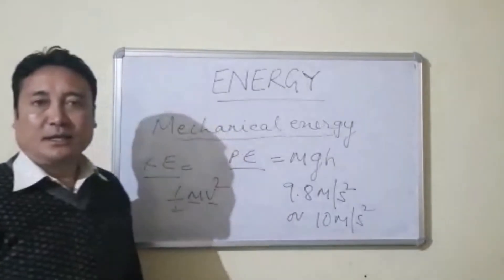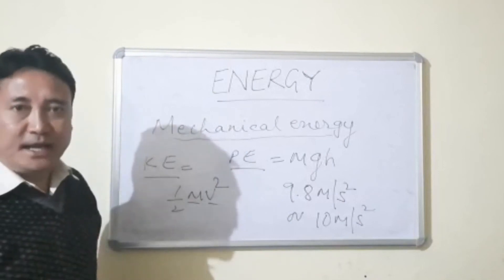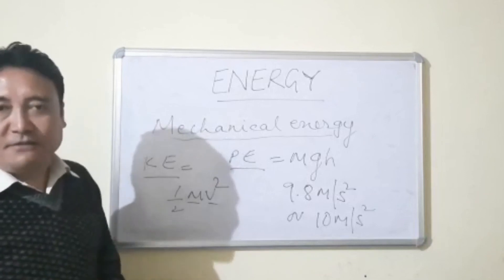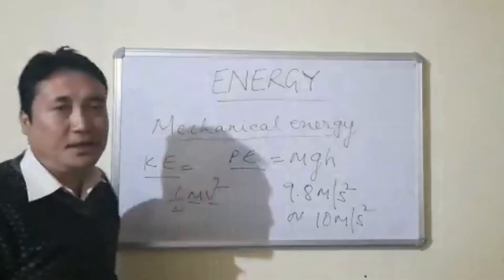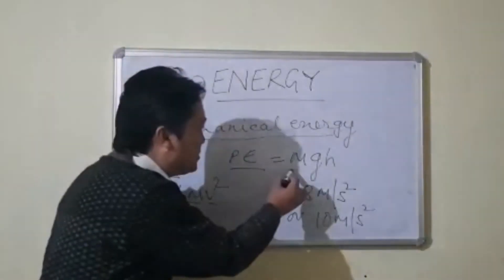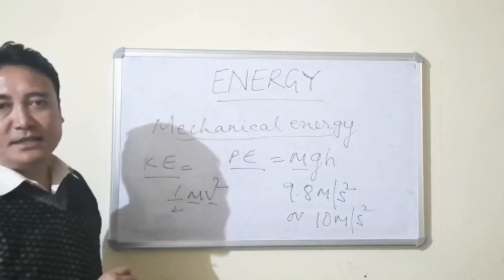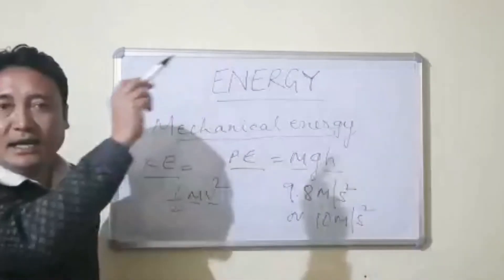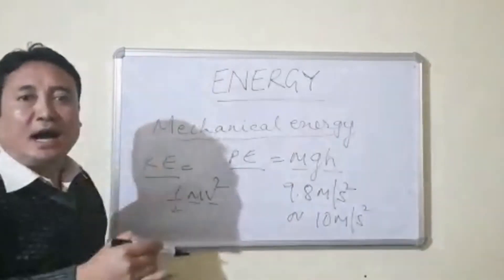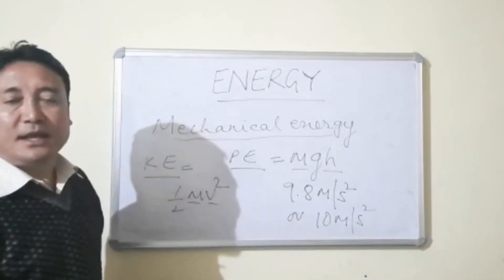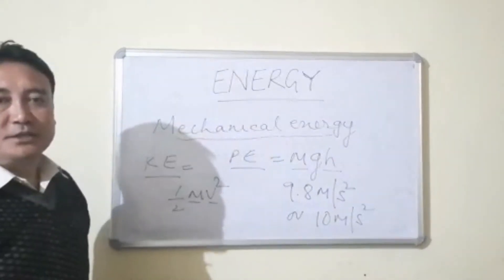Examples of potential energy include energy stored in a dam. These are in a state of rest, or they have changed their position or their shape and size. Potential energy is directly proportional to the mass — more the mass of the body, more will be the potential energy; lesser the mass, lesser will be the potential energy. It also depends upon the height — greater the height to which the body has been raised, more will be the potential energy. So there are two forms of mechanical energy: kinetic energy and potential energy.